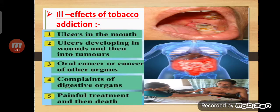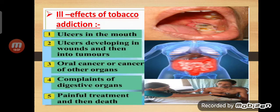If the wounds do not heal, the person has serious problems, and this can eventually lead to cancer. 'Eventually' means finally — you can get cancer. Tobacco entering the digestive organs — your large intestine, small intestine, stomach, all these — leads to complaints related to them. You will have indigestion and many problems inside. The constant, continuous presence of tobacco in the digestive organs can cause cancer of any of those organs.